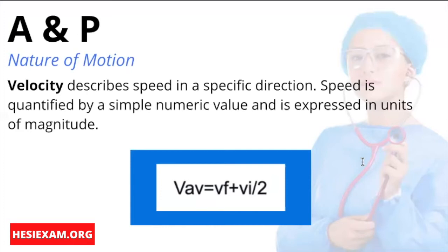This is expressed in units of magnitude and direction of motion. The average velocity of an object can be found by averaging the initial speed and final speed of the object, or add together and divide by two.